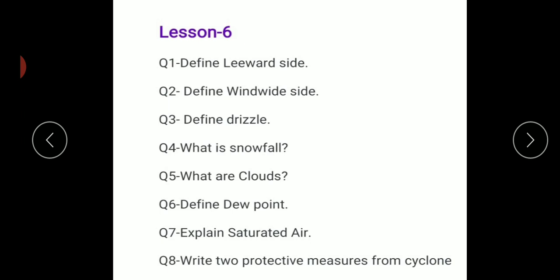Two protective measures from cyclones: human settlements should not be close to the sea, a warning system should be there to detect cyclones, and buildings near the coast should be built on stilts. These are the measures which you can take.